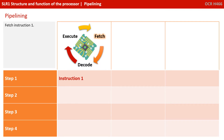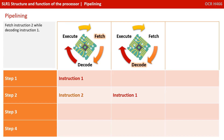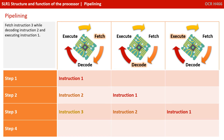Our processor starts by fetching the first instruction. We then fetch instruction two, while instruction one moves on and starts to be decoded. The processor now fetches instruction three, while decoding instruction two, and executing instruction one. The process continues: the processor fetches instruction four, while decoding instruction three, and executing instruction two.